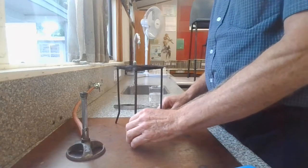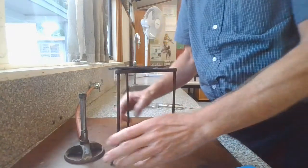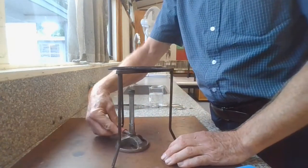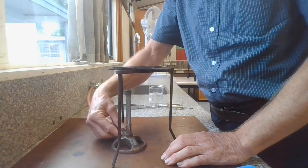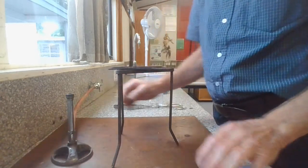First thing before you light the Bunsen is to ensure that the Bunsen and the tripod are positioned so that the Bunsen can be moved in and out from under the tripod nice and comfortably.